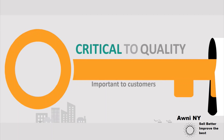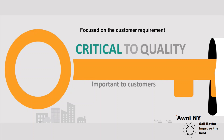Let's now move to the fifth point, CTQ — critical to quality. Another critical philosophy of Six Sigma is that it is based on customers' needs. Whatever improvement we are planning to do, it has to be focused on customer requirements. Critical to quality are all those parameters which are important to customers. You don't want to do any improvement that is not important to your customer, because that will be a waste of time and money on something the customer is not concerned about. You have limited resources, so do improvement in those areas which are of concern to your customer. This is the philosophy of CTQ.